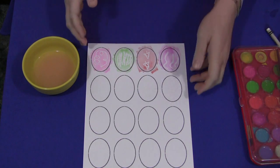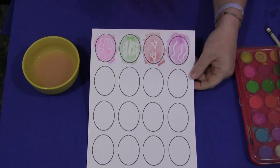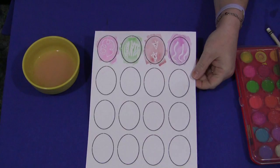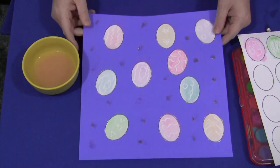And again, you would let that dry. And then once that's dry, you would cut these out. And then you would glue them on either colored cardstock paper or construction paper.